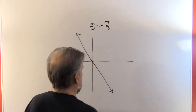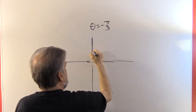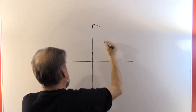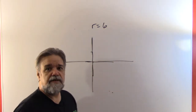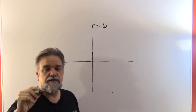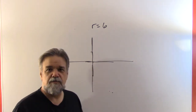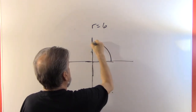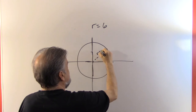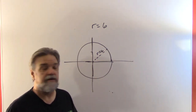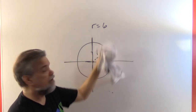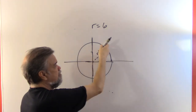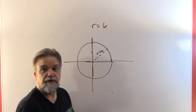Now let's look at what happens if you have r equals a constant. Let's let that constant be six. So if r equals six, that means these are all the points that are exactly six units away from the origin. All the points that are exactly a certain number of units away from a certain point — that's the definition of a circle. So this is just a circle around the origin with radius six. The bigger the constant r is, the bigger your circle; the smaller, the smaller. And bizarrely enough, this would also be the graph of r equals negative six — because no matter what direction you're pointing in, if you back up six units, you'll also be on that circle.